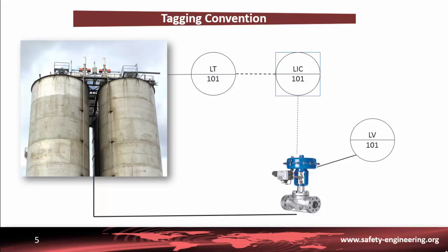Knowing the device tag number is required when filling out a work order or when discussing a field measurement with an operator or instrument technician. The tag number assigned to a field device is normally stamped on the tag attached to the device. All devices used together to perform a specific function are normally assigned the same loop number. For example, the flow transmitter and regulating valve used to measure and regulate the flow of a process stream may be assigned loop number 101.